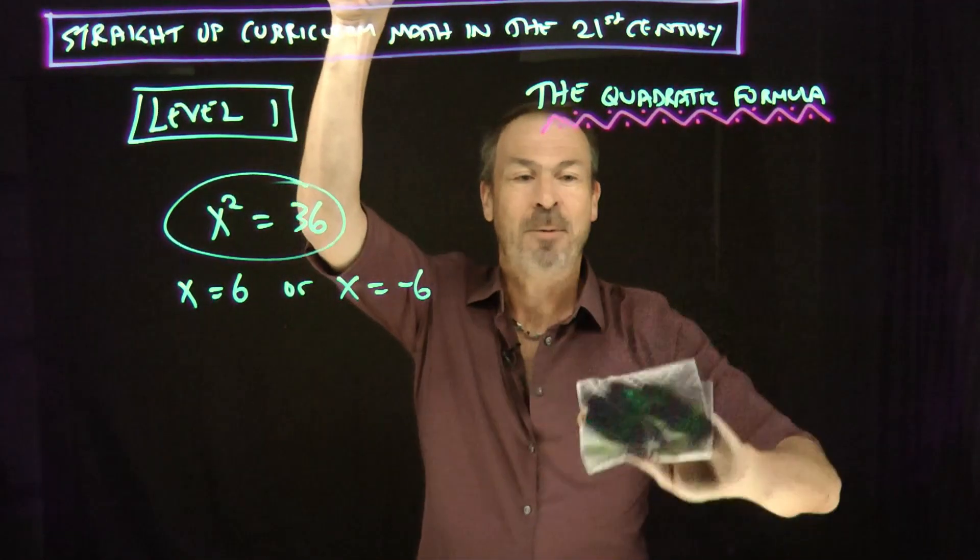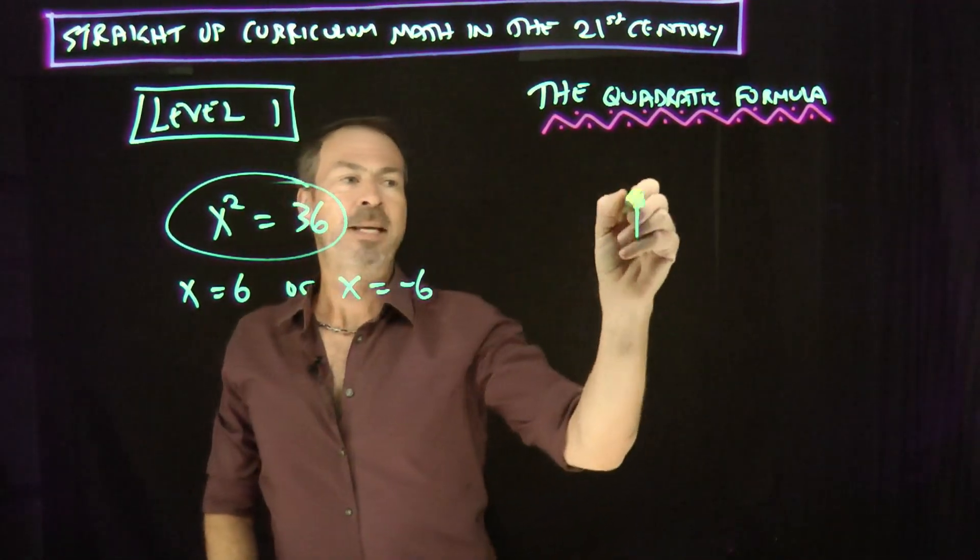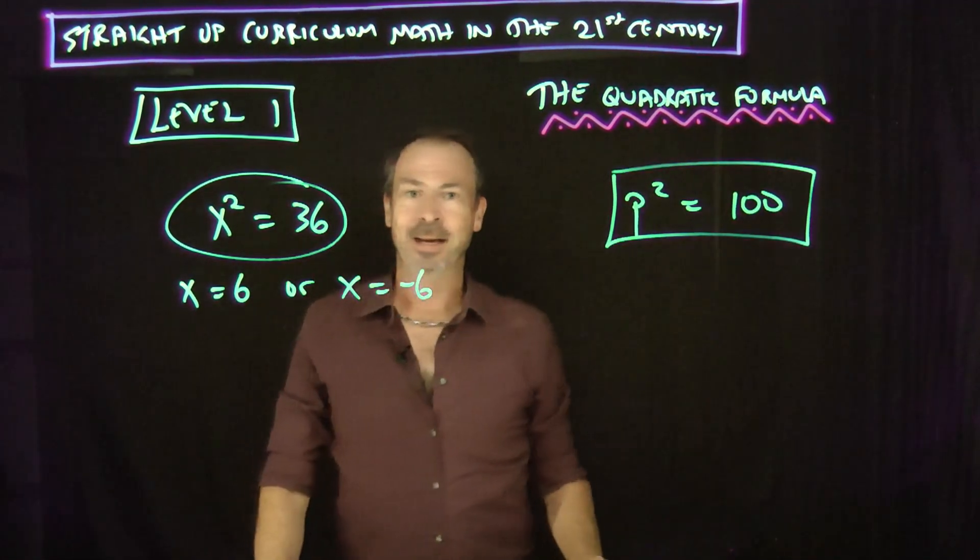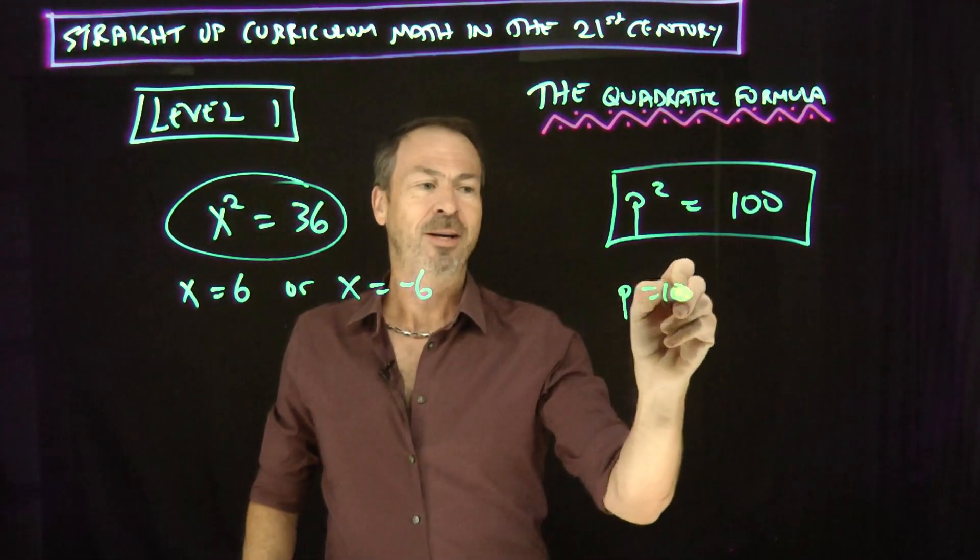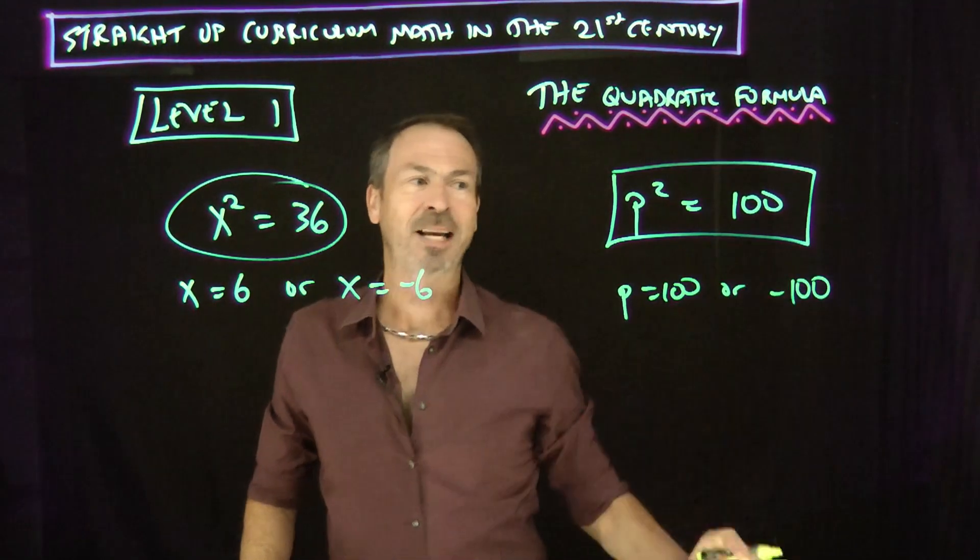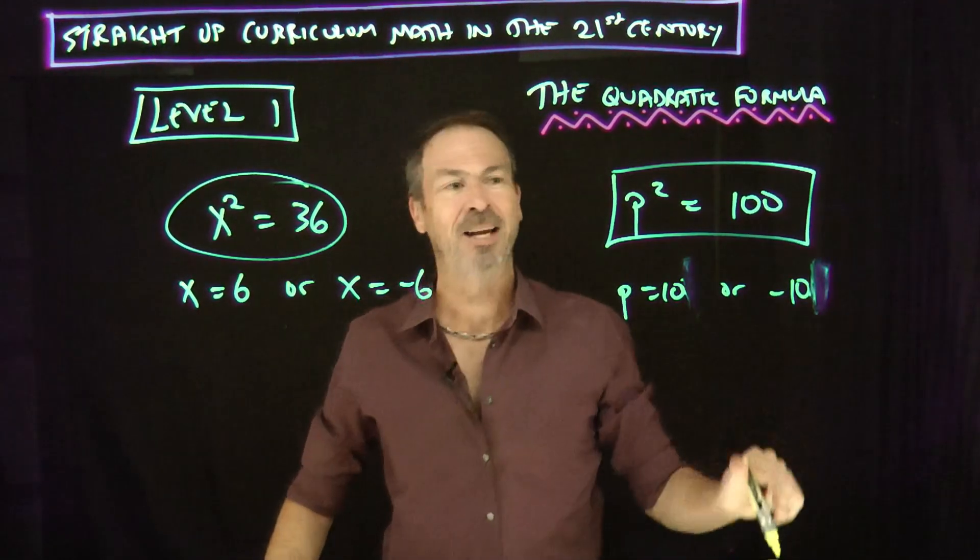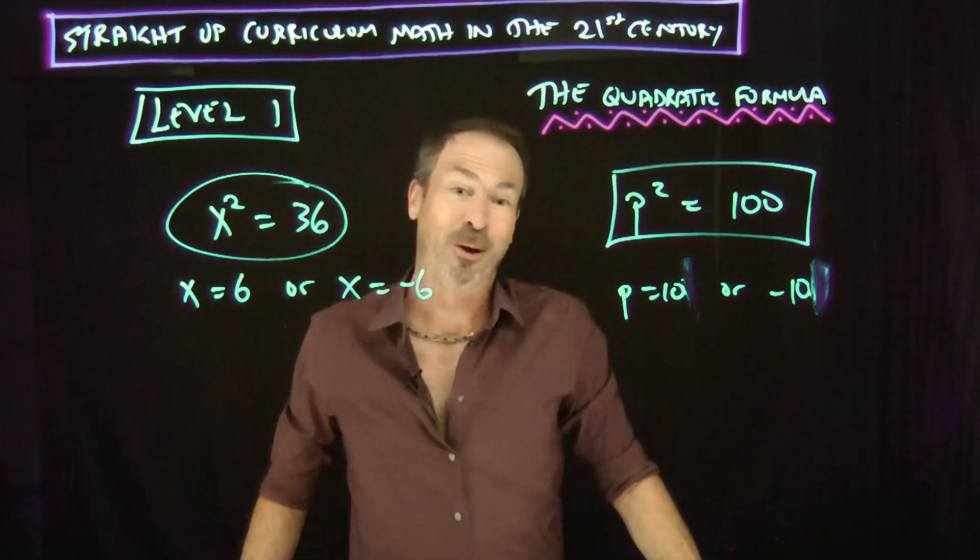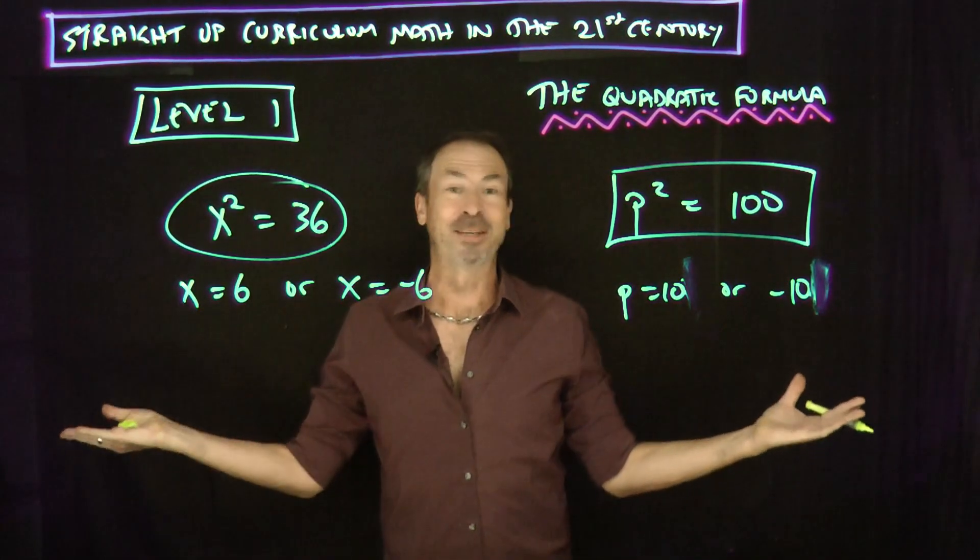Let's do another one. Suppose I asked us to solve p squared equals 100. You'd say, no worries. p could either be 10 or it could be the negative version, negative 10. A number squared is 100, p better be 10 or it could be negative 10 if we're going to arithmetic. Piece of cake.